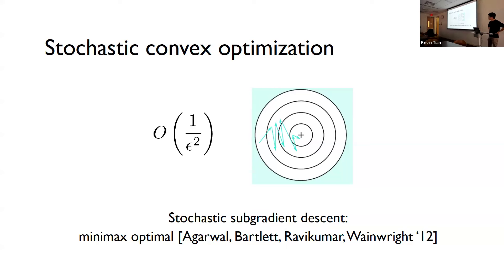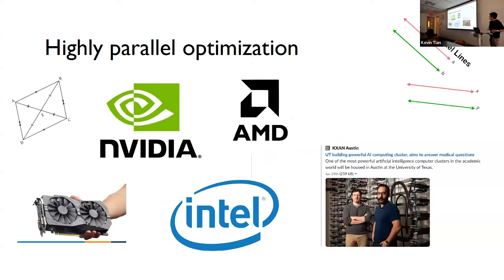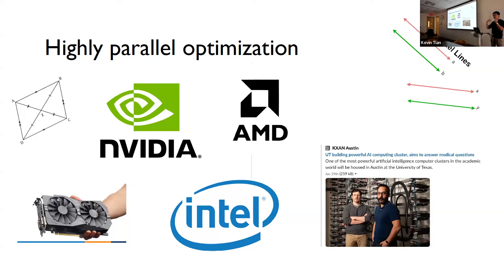It sounds like we have a pretty good understanding of stochastic convex optimization — so why am I here? It's 2024, and we shouldn't settle for algorithms that just query the gradient a single time. We can use new models of computation, including parallel computation here at UT, where we can query the oracle multiple times in parallel and try to use this to our advantage. This is the problem of highly parallel optimization.